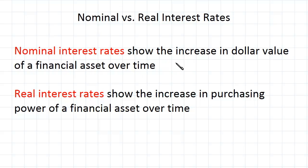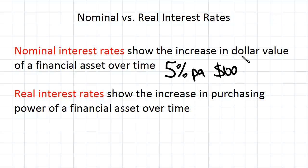For example, with a nominal interest rate of 5% per annum, if you have $100 of value in a financial asset — say in a bank account — after one year that will become $105. The nominal interest rate is the actual interest rate you would see quoted. If you look at a bank account and it says 3% per annum or 4% per annum, that's the nominal rate.